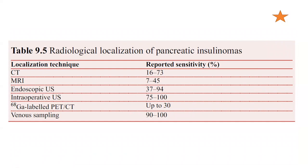Regarding radiological localization of pancreatic insulinomas: endoscopic ultrasound has approximately 94% sensitivity. Intraoperative ultrasound is almost 100% sensitive. Arterial calcium-stimulated venous sampling, an invasive test, also has 100% sensitivity for localization of pancreatic insulinomas. So endoscopic ultrasound is the highest among non-invasive methods, while intraoperative ultrasound and calcium-stimulated venous sampling both approximate 100%.